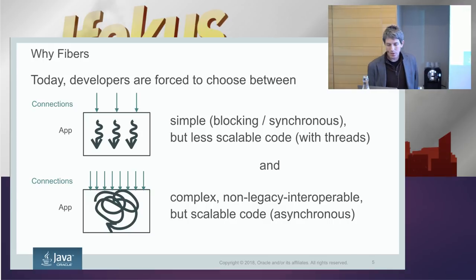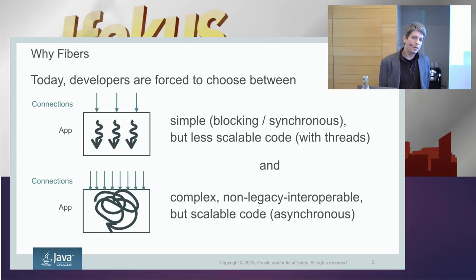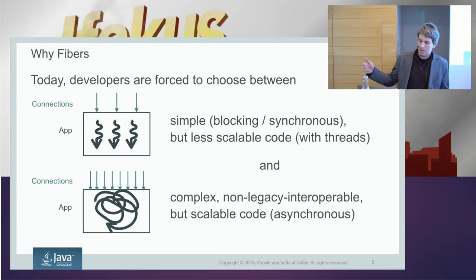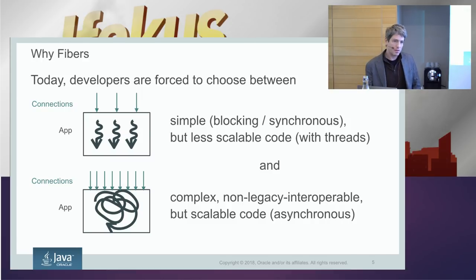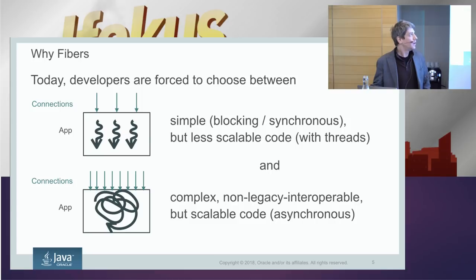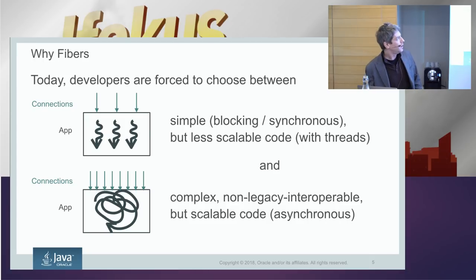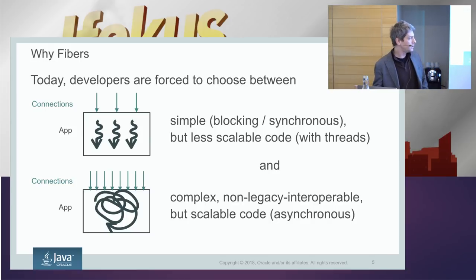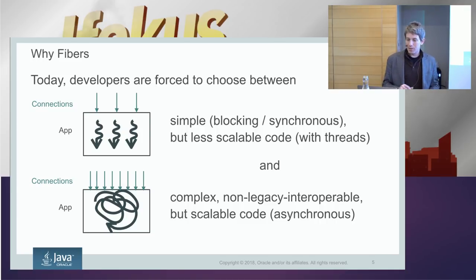Developers in general have two options today. They can either write very simple code where they assign a single thread for each connection, or any kind of domain-level concurrency unit — a connection, a session, or a transaction. But in that case, the OS becomes a bottleneck, because a modern server can serve over a million open TCP sockets, but only a few thousand active threads. So what others do is write asynchronous code, which makes everything much more complicated — both in terms of writing, reading, debugging, and profiling the code. A big problem with asynchronous code is that it is completely non-interoperable with blocking code.